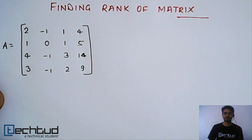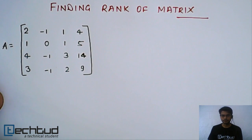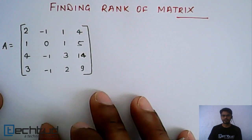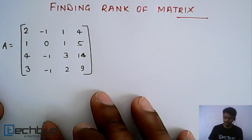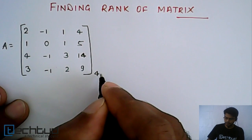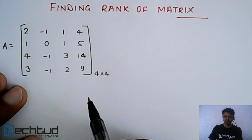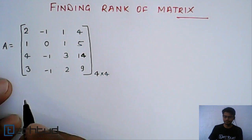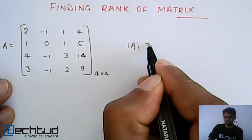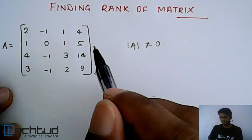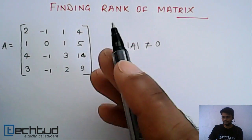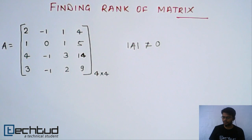We have an example here. We will solve this example rather than going through theories. Before we solve it, I would like to discuss the approach towards the problem. Once you get a matrix to find the rank, we should think: for example, this is a 4×4 matrix. The maximum possible rank is 4, and rank will be 4 only if the determinant is not equal to 0.